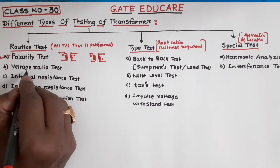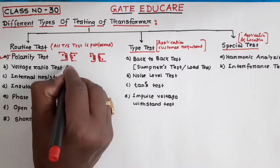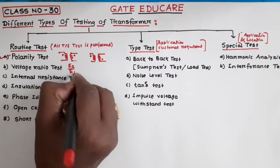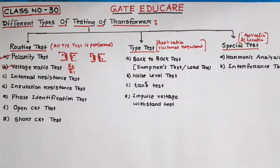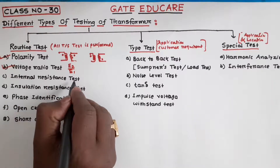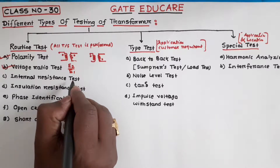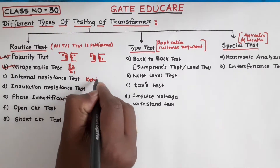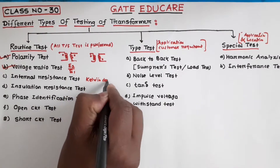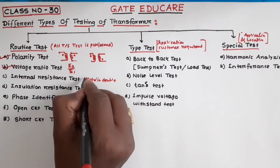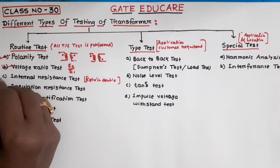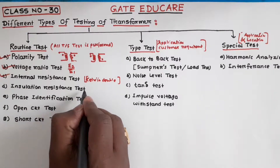Next, the voltage ratio test. With the help of the voltage ratio test, the voltage ratio E2 by E1 is determined. Internal resistance test: with the help of this test, the internal resistance of the winding is measured. Generally, the Kelvin double bridge is used to measure the resistance of the winding.